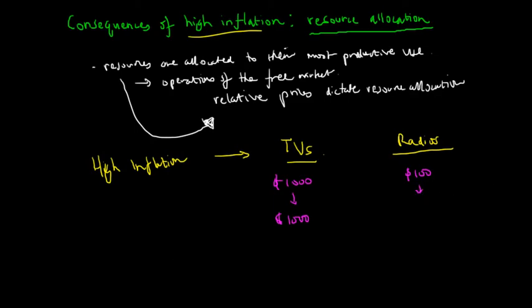By the same token, if we see that the price of radios increases from a hundred dollars to two hundred dollars and the price of TVs only increased from a thousand dollars to fifteen hundred dollars, the relative increase in the price of radios, which is times two, is greater than the relative increase in TV, which is times 1.5. So more resources will be devoted into the production of radios because the relative price has increased. That's how resources are allocated according to their relative price and how consumers send price signals to producers.